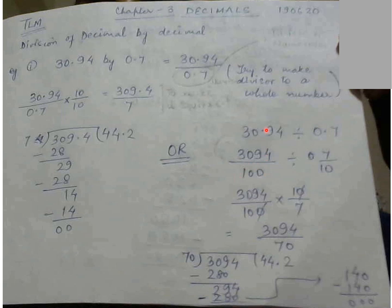How I have written, because 0.94 means two digits after decimal. And 0.7 is written as 7 by 10. Following the rules of division of fraction, 3094 by 100 into 10 by 7, and when you multiply it you will get the same answer, 44.2. You can do any method whichever you are comfortable in.